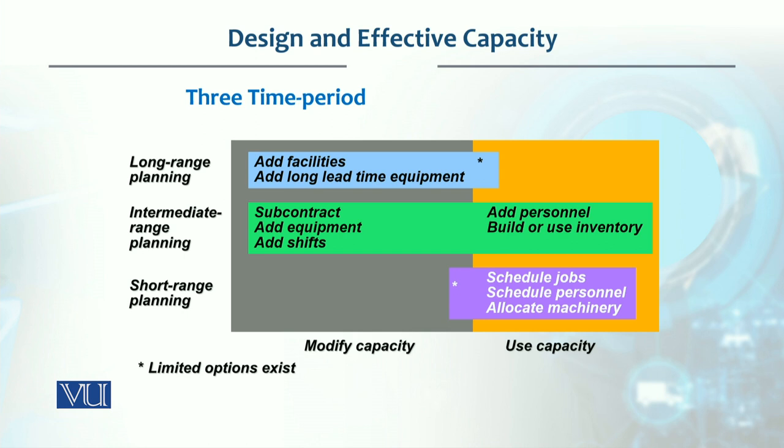Again, scheduling of personnel — for example, inside restaurants, different time periods have different numbers of personnel depending upon the demand period. In the evening during dinner time, if there is more rush, more staff will be there; during breakfast time, since there is less rush, fewer staff will be kept. Similarly, capacity can also be handled through machine allocation for production.